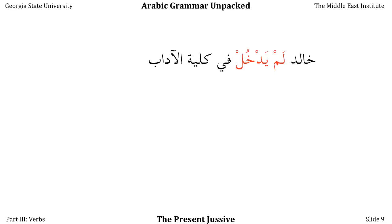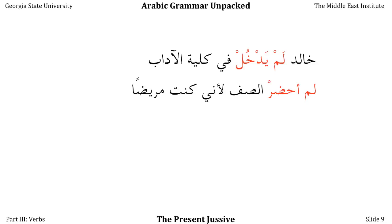So خالد لم يدخل في كلية الأدب means 'Khaled did not enter the school of literature.' If we got rid of لم and replaced the final sukūn in يدخل with a ḍamma, it would mean 'Khaled enters.' But because of لم, we're negating the past tense, even though we're using a version of the present tense to do it.